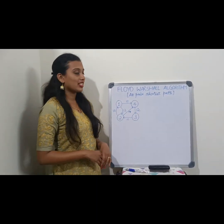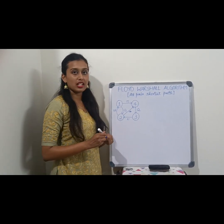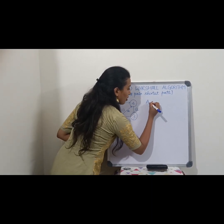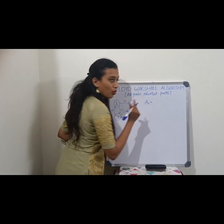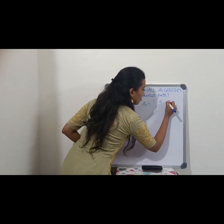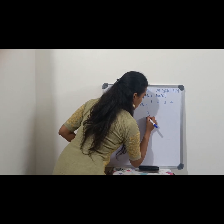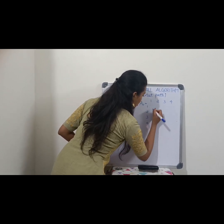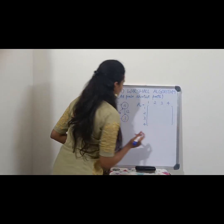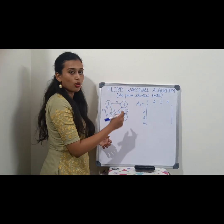Now let us consider an example. For this weighted graph we need to first write the distance matrix. We'll denote our distance matrix as A0. Since we have four vertices we need to construct a 4×4 matrix. Since these four vertices have no self-loops, we'll be writing 0 on the diagonals.